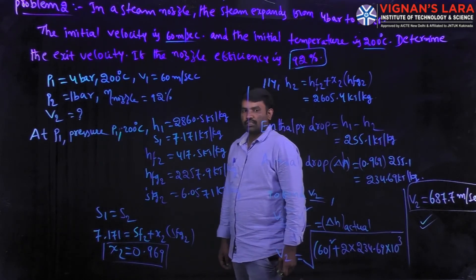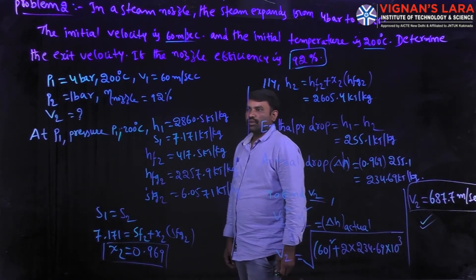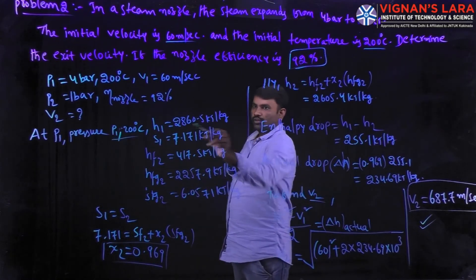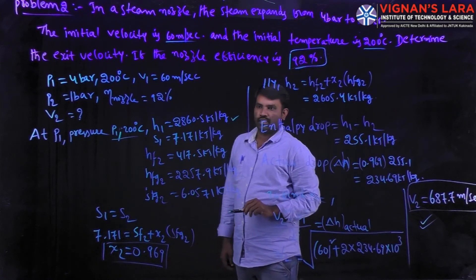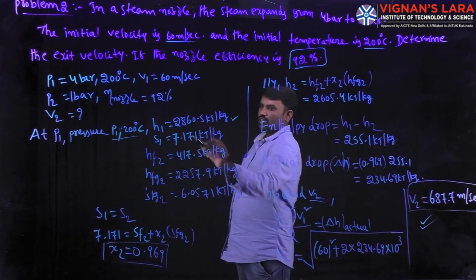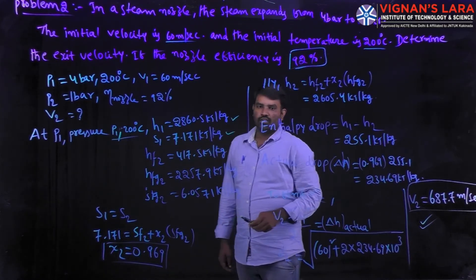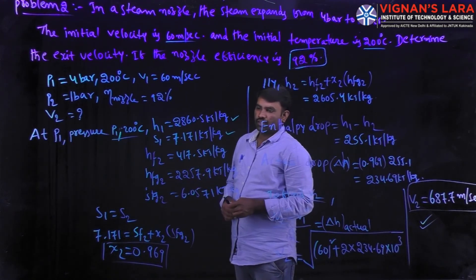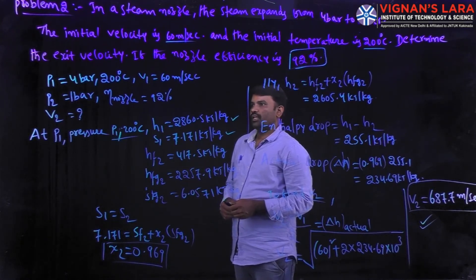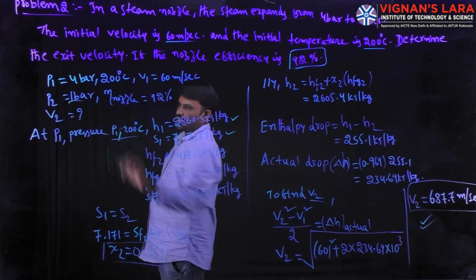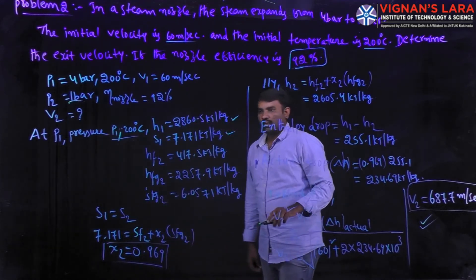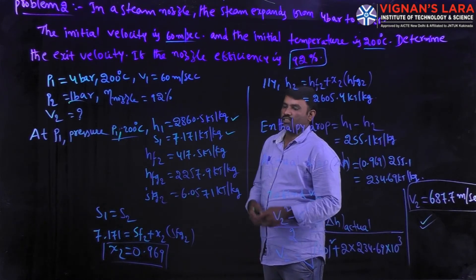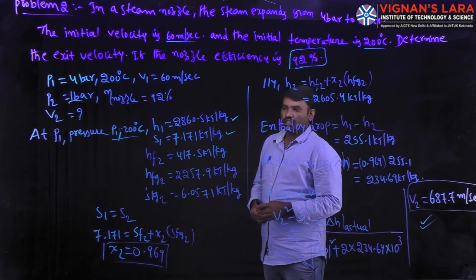From the steam tables, take the enthalpy of steam at pressure P1 and 200 degrees centigrade: h1 is 2860.5 kilojoules per kilogram, and s1 is 7.17 kilojoules per kilogram. At pressure P2 equal to 1 bar, take the values of hf2, hfg2, sf2, and sfg2 from the steam tables.